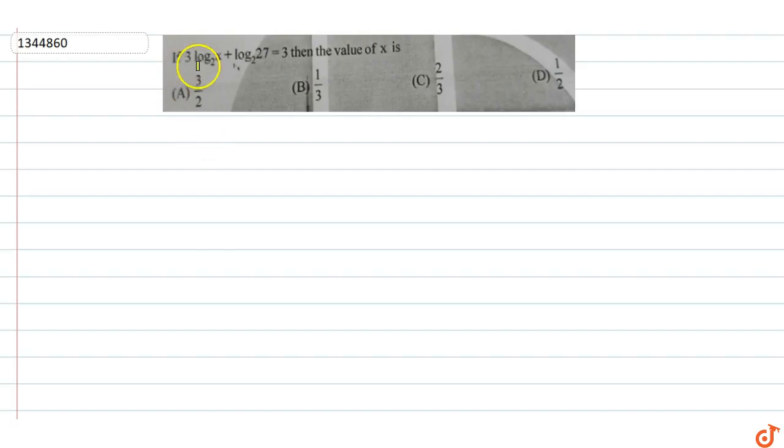In this question, if 3 log x base 2 plus log 27 base 2 is equals to 3, then find the value of x. So 3 log x base 2 plus log 27 base 2 is equals to 3.